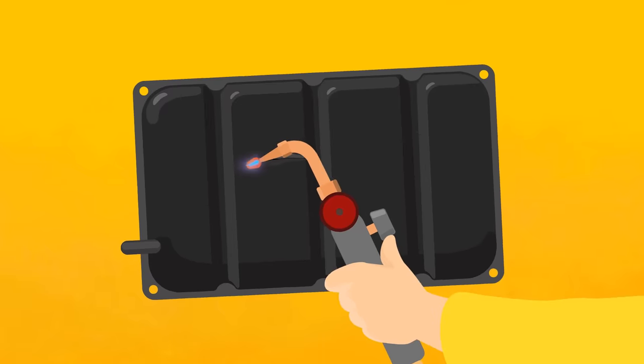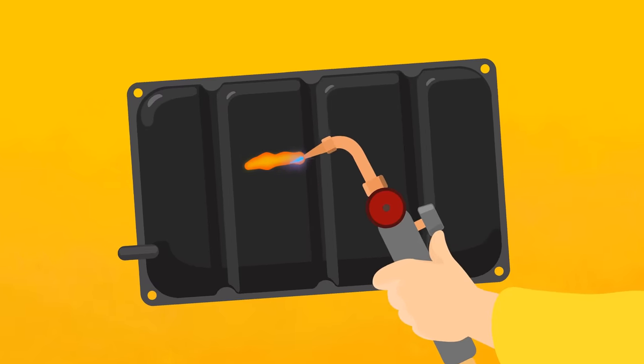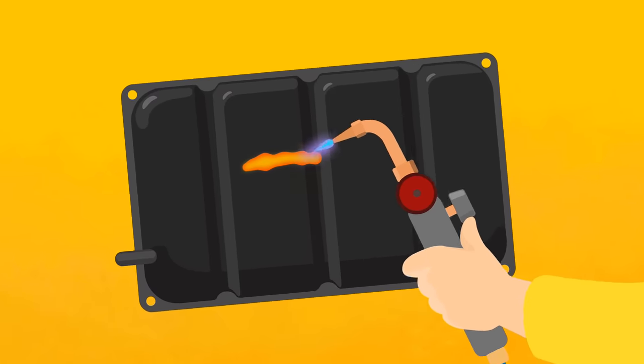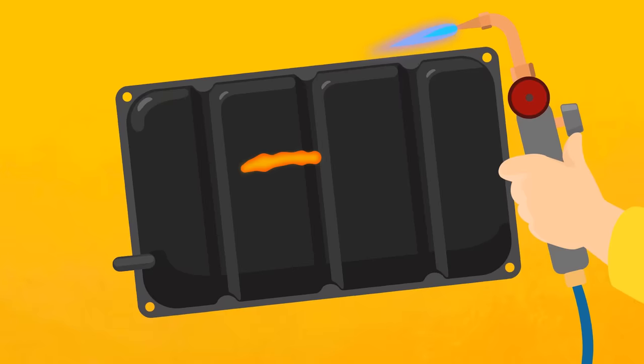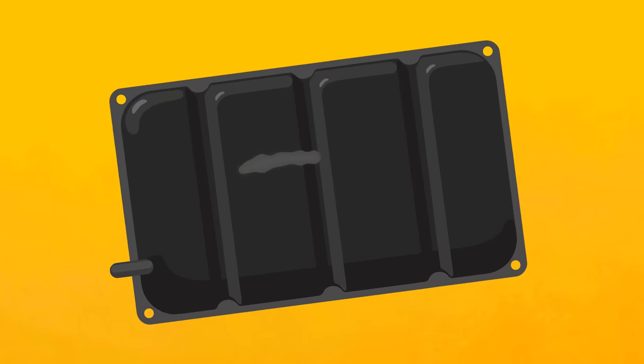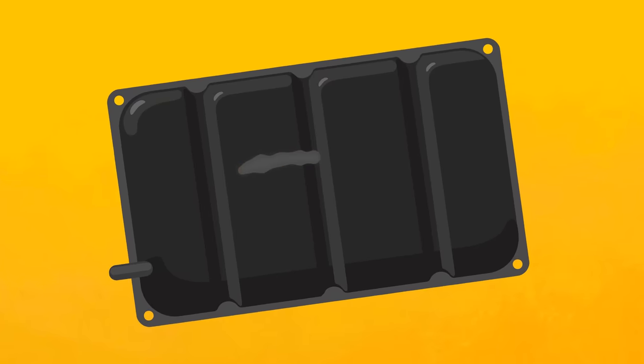The metal got hot and turned red. And then it cooled down and became gray again. And the crack disappeared.